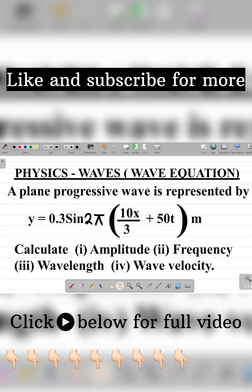Now the question says, a plane progressive wave is represented by y equal to 0.3 sine 2 pi into 10x over 3 plus 50t, all in meters.